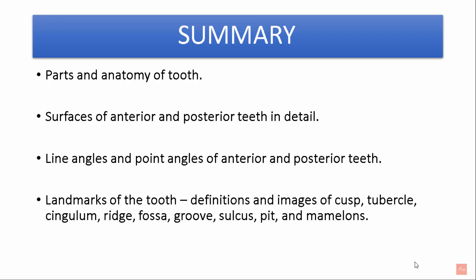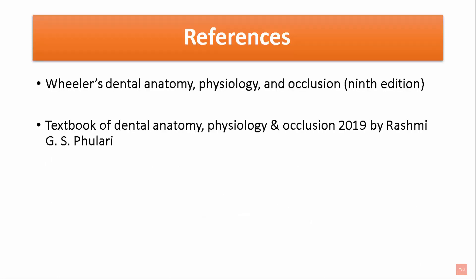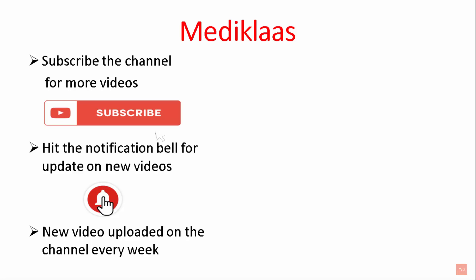Let's summarize what we learnt today. We learnt about parts and anatomy of the tooth — crown, root, enamel, dentine, pulp, etc. We learnt about surfaces of anterior and posterior teeth including mesial, distal, lingual, and palatal surfaces. We also learnt about line angles and point angles of anterior and posterior teeth, and the landmarks of the tooth: cusp, tubercle, cingulum, ridge, fossa, groove, sulcus, pit, and mamelons. You can find the link to a Google Form with MCQs related to this topic. Thank you for watching — please subscribe and hit the notification bell for updates on new videos.